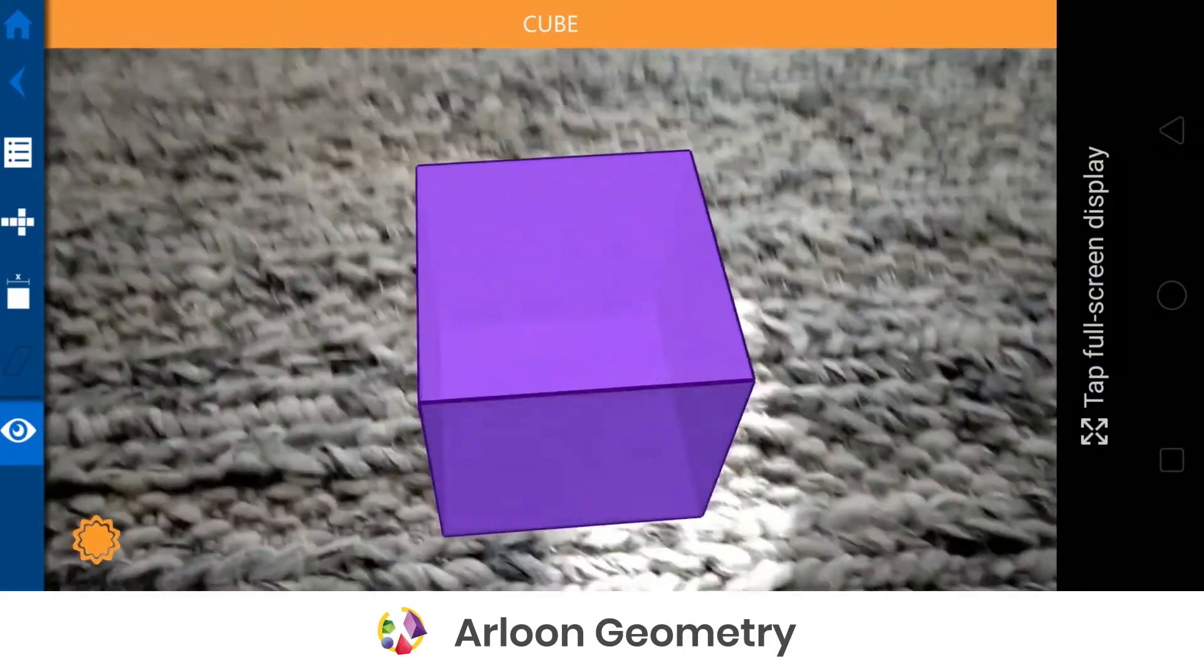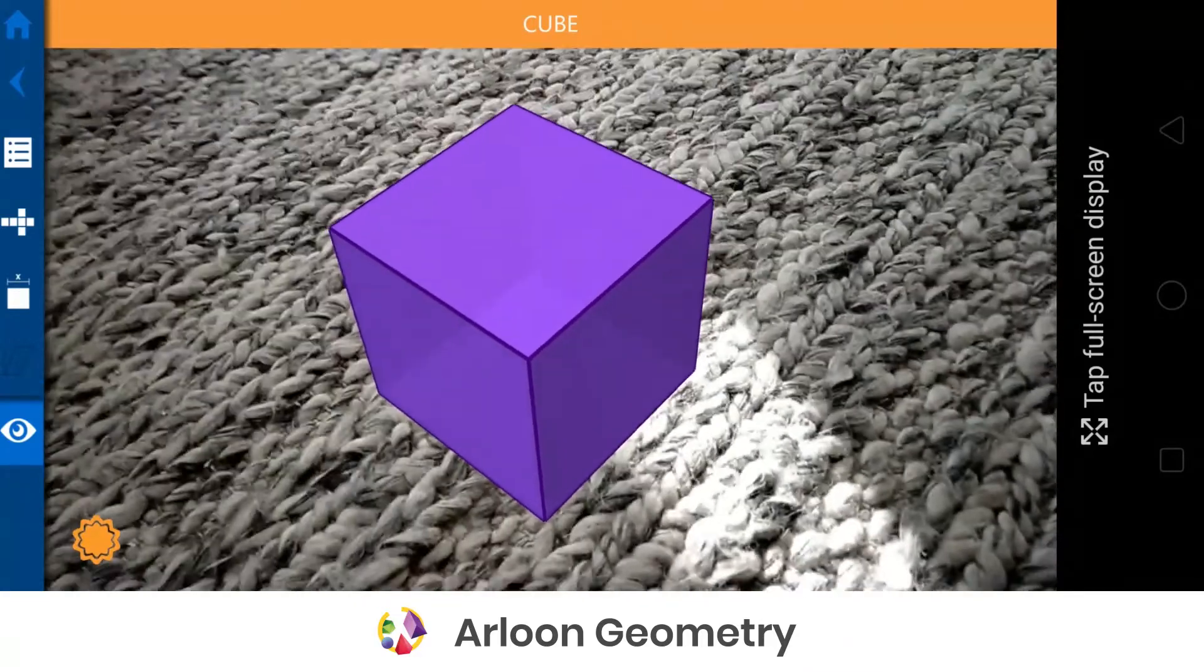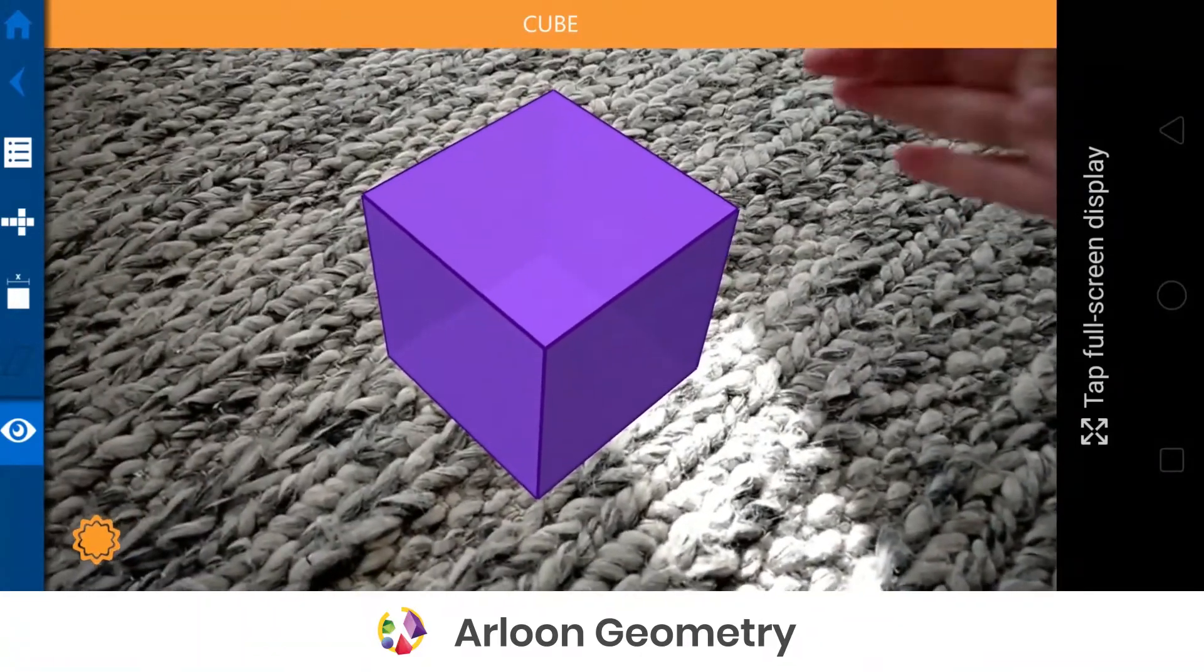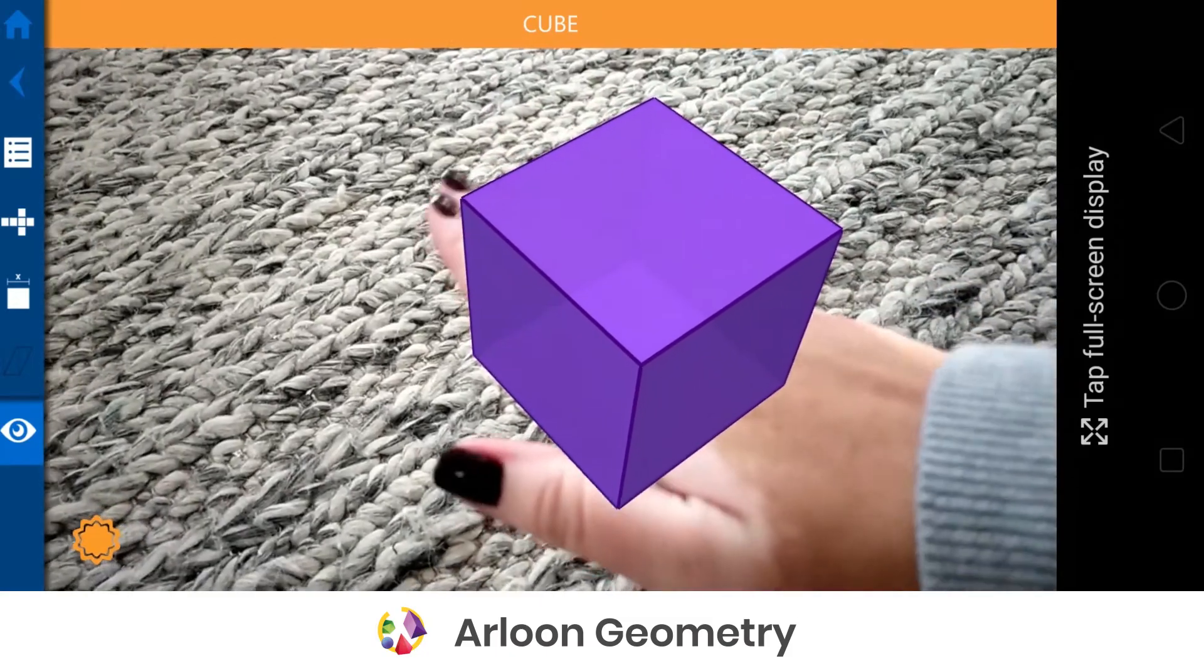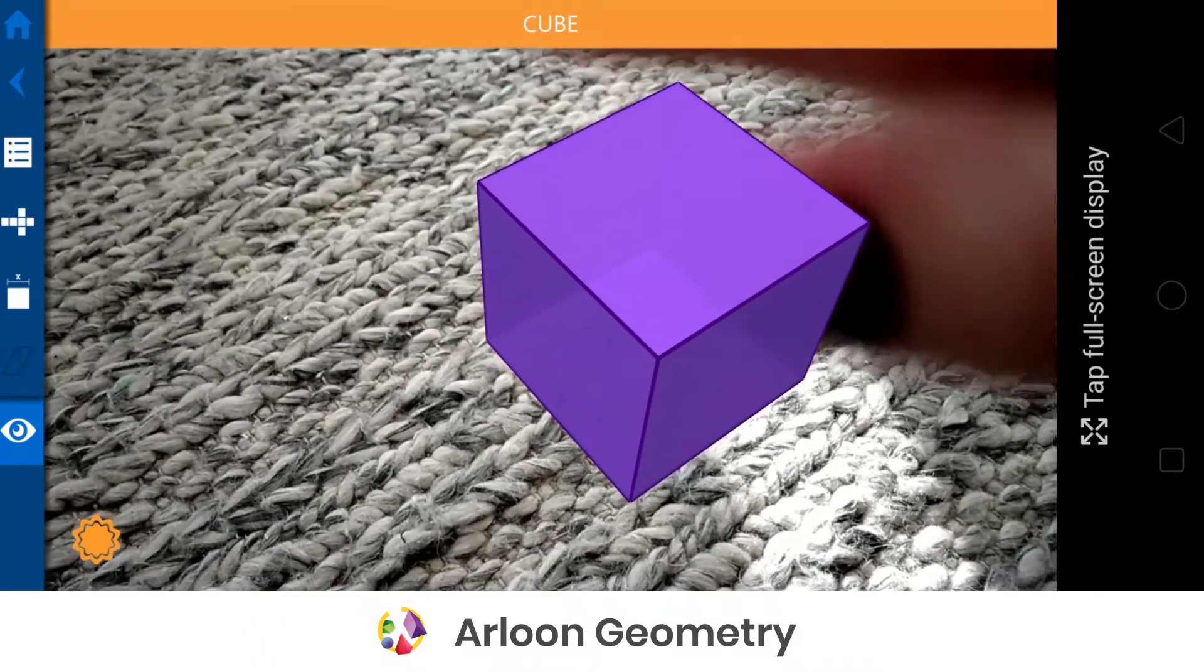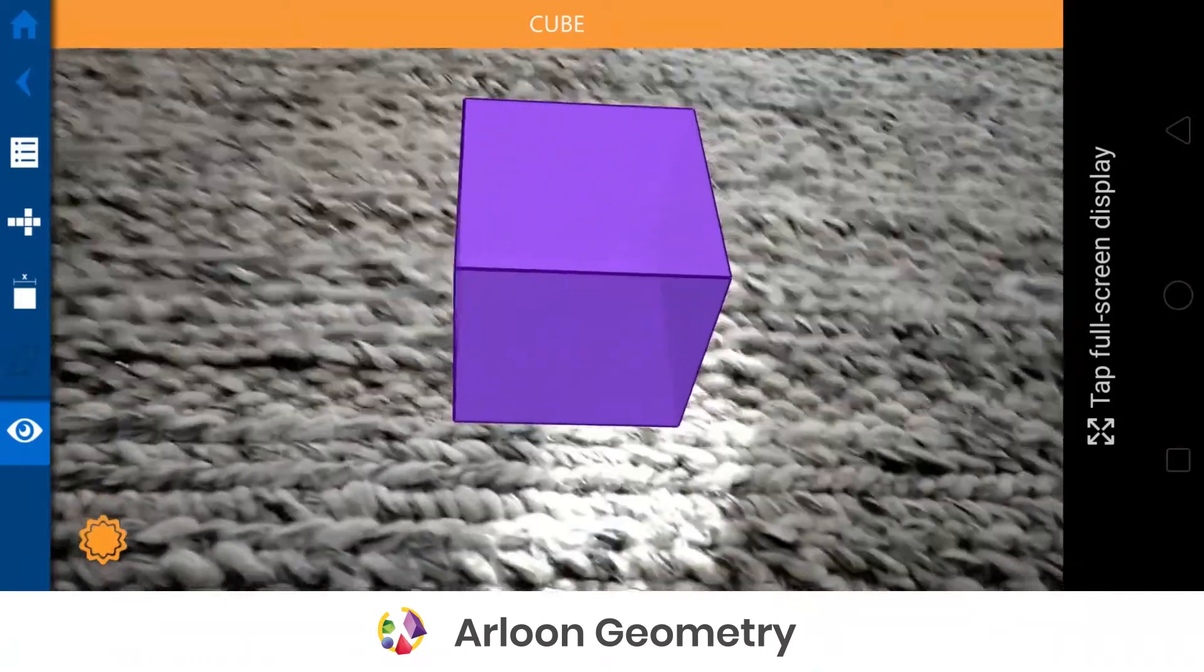So you hold your phone parallel to the surface, you need a surface with some nice texture on it, so I'm using my rug here, and then you can place the object and it'll stay put. You can move the phone around from here, you can move the camera around, you can put things in the way and it'll stay static as if it really was in the real world.